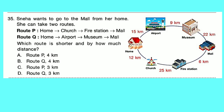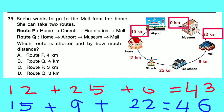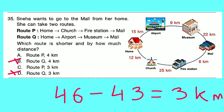Question number 35: Sneha wants to go to the mall from her home via 2 routes. Route P: Home to church to fire station to mall — 12 plus 25 plus 6 equals 43 km. Route Q: Home to airport to museum to mall — 15 plus 9 plus 22 equals 46 km. Clearly 43 km is less than 46 km, so route P is shorter. 46 minus 43 equals 3 km. Route P is shorter by 3 km. Option C is correct. Thanks for watching — please like, share and subscribe to the channel.